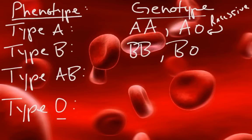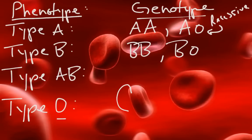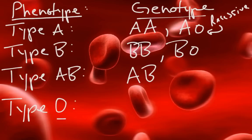Interestingly, A and B are both completely dominant to O, but A and B are co-dominant to each other. Co-dominance means both alleles show up, so A and B are both dominant, and when you inherit them together you get both types of blood. The only genotype for type AB is to have an A allele and a B allele — inheriting an A from one parent and a B from the other gives you both types of antigens. Since O is recessive, the only way to be type O is to have two recessive O alleles.